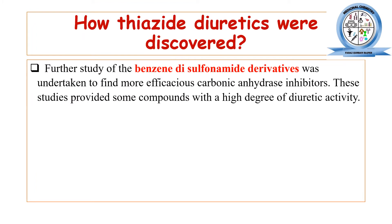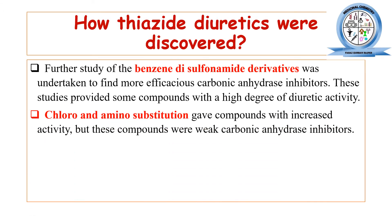How were thiazide diuretics discovered? Carbonic anhydrase inhibitors are a well-known class of diuretics. Chemically, carbonic anhydrase inhibitors are derivatives of benzene disulfonamide compounds. When different derivatives of carbonic anhydrase inhibitors were being synthesized to get more effective compounds, certain types of compounds with more diuretic activity were made by chloro and amino substitution.